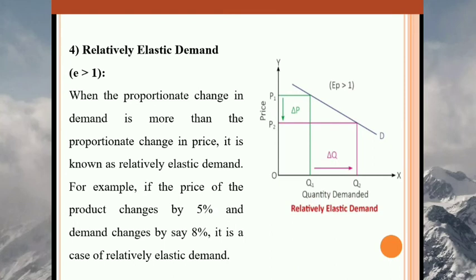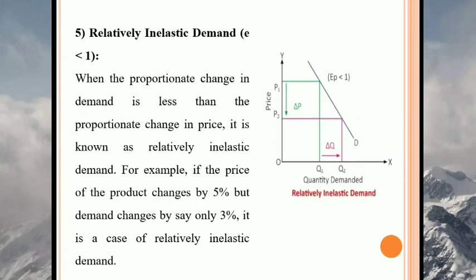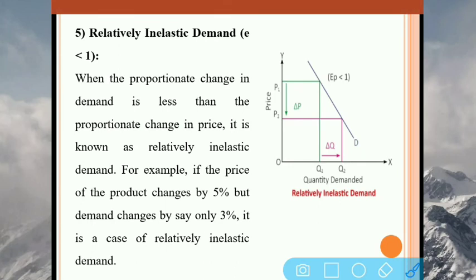And next is relatively inelastic demand. When the proportionate change in demand is less than the proportionate change in price, it is known as relatively inelastic demand. It means price changes by 5%, but demand only changes by 3% — that is relatively inelastic demand. Here you can see from the diagram that price changes 5%, but demand only changes 3%. The demand portion is very small compared to the price change.